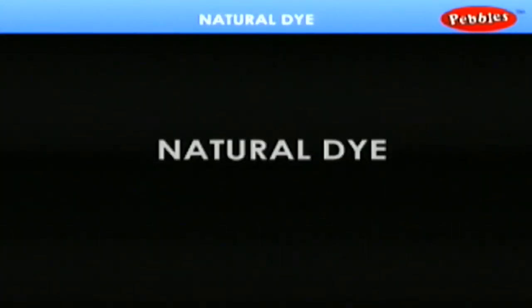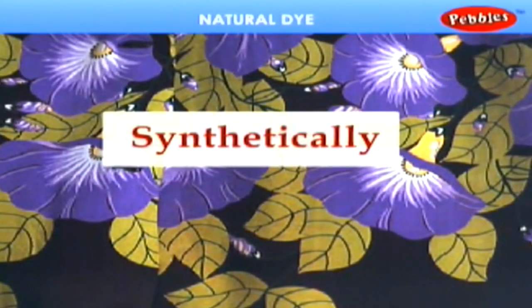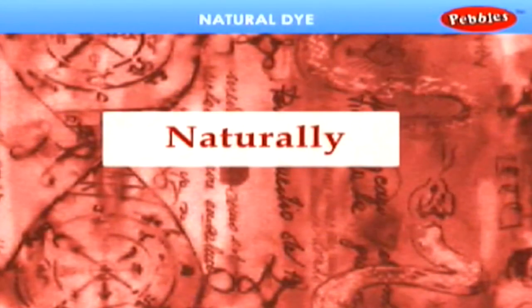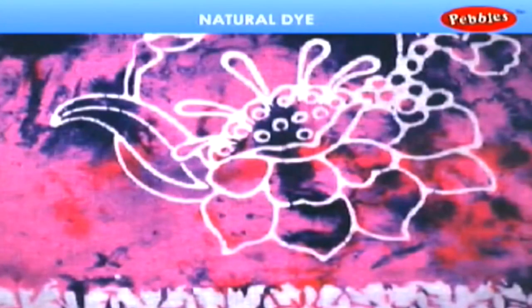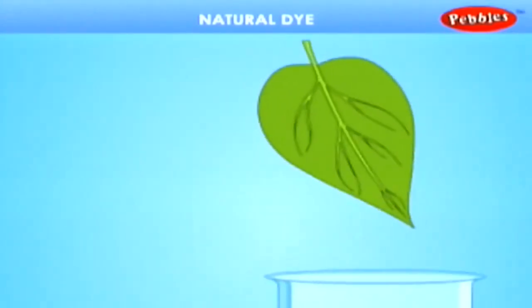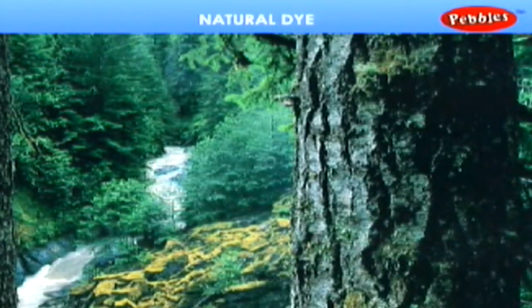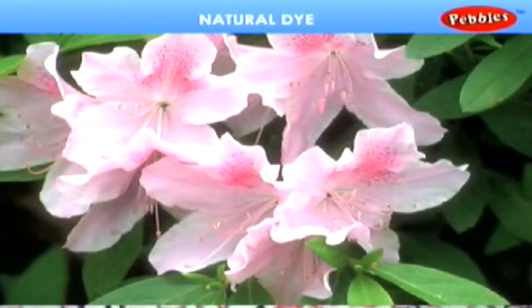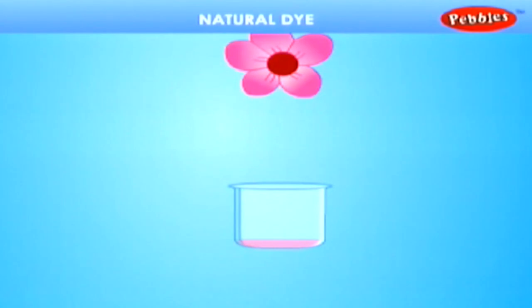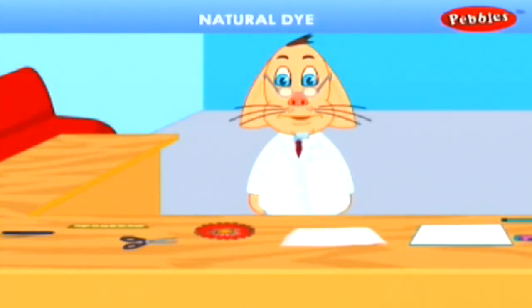Natural dye. Nowadays, nearly all dyes are made synthetically, but in the past, most of these were made from plants like leaves, woods, flowers, sand and stones etc. Let us dye a handkerchief with a natural dye.